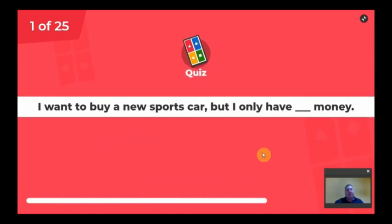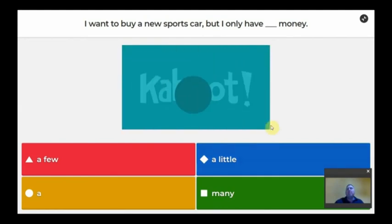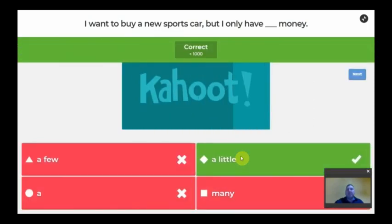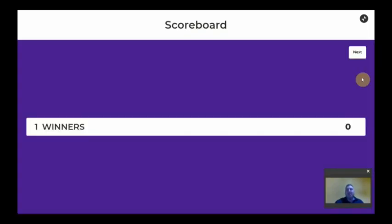Number one: I want to buy a new sports car but I only have money. Money as cash is an uncountable noun, which means we can only use what? A little. Yes, it's correct. Thousand points for you.